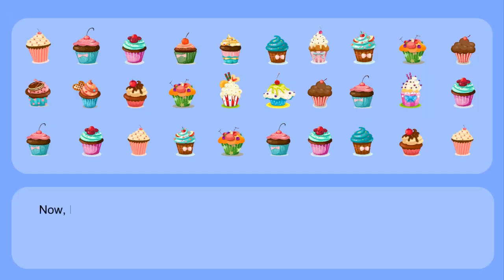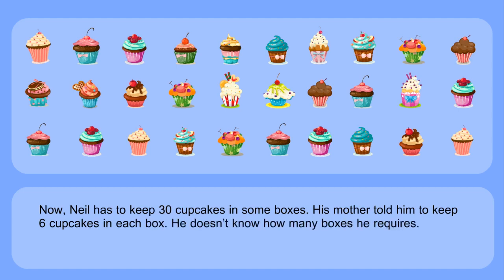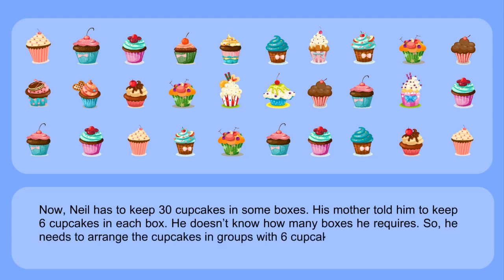Now, Neil has to keep 30 cupcakes in some boxes. His mother told him to keep 6 cupcakes in each box. He doesn't know how many boxes he requires, so he needs to arrange the cupcakes in groups with 6 cupcakes in each group.